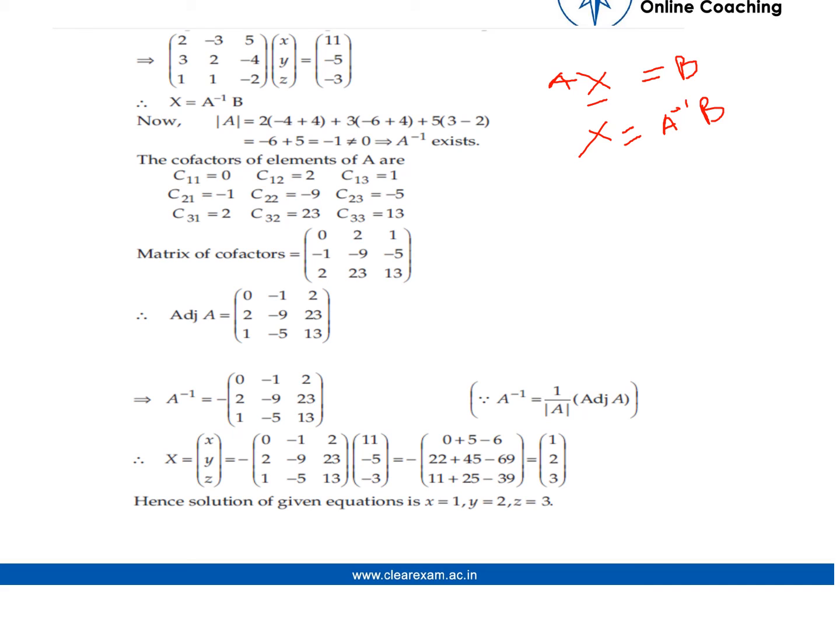So we have to find A inverse. First we need to check whether A inverse exists or not. For that we need to find the determinant of the A matrix. As it comes out to be minus 1, which is not equal to zero, hence A inverse exists. For finding A inverse, first we need to find the cofactors of elements of A. These are the cofactors of elements of A.